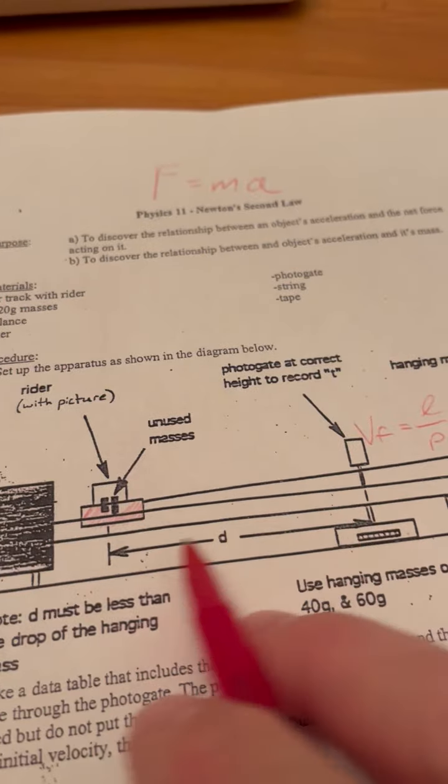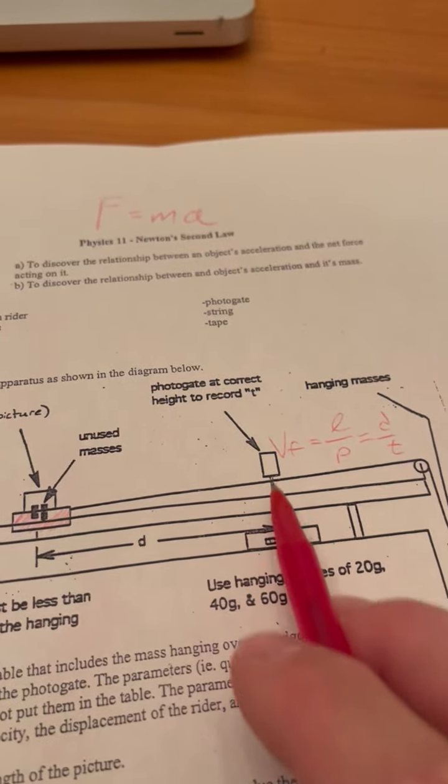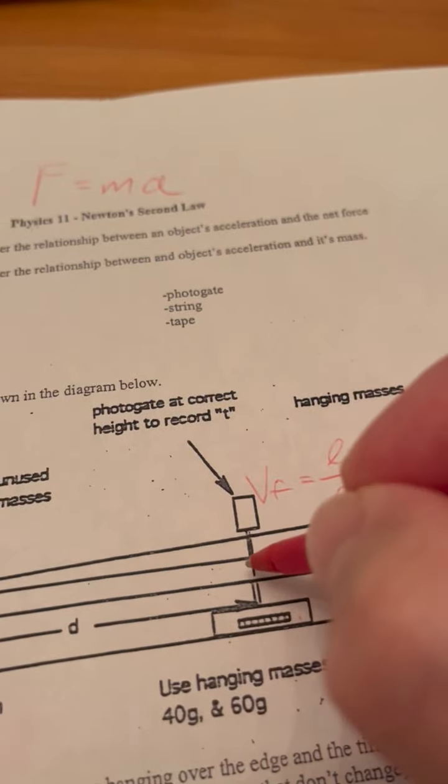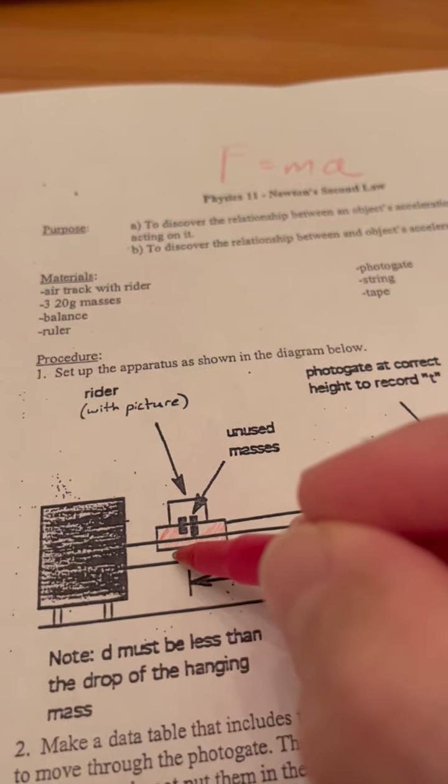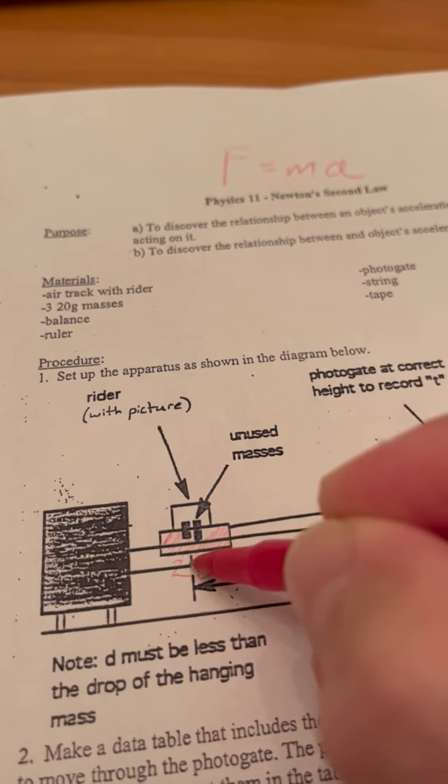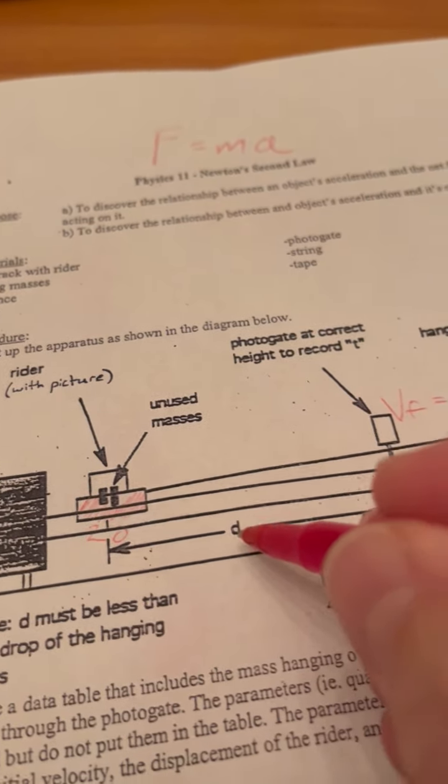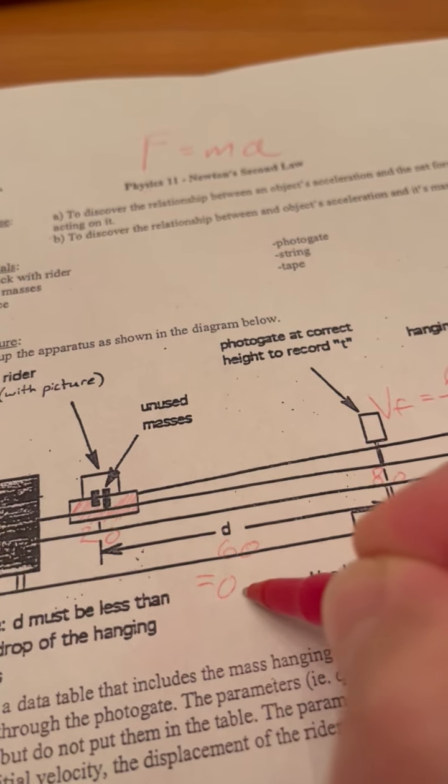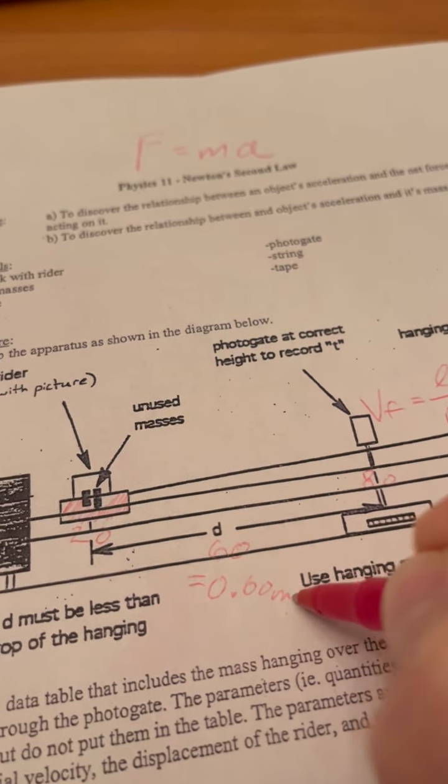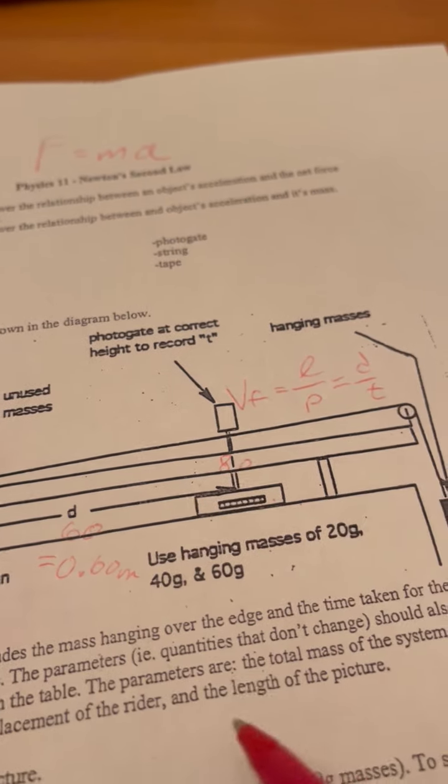We need this D as well. So put your photogate, if this is at like, let's say you put this at 80, and you release it every time from 20, and you want that in the middle of your rider, then this is going to be 60 centimeters, right? Which will equal 0.6 meters. And that's going to be the D.